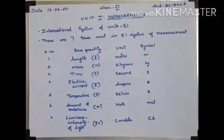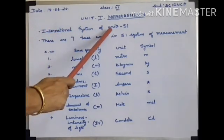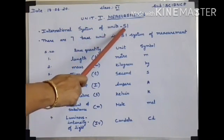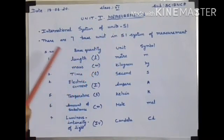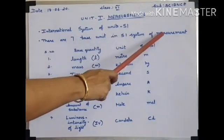Different places have created different standard units of measurement. So, for the sake of uniformity, scientists all over the world have accepted a set of standard units of measurement. This standard system of units is known as the International System of Units, otherwise called SI units. There are 7 base units in the SI system of measurement.